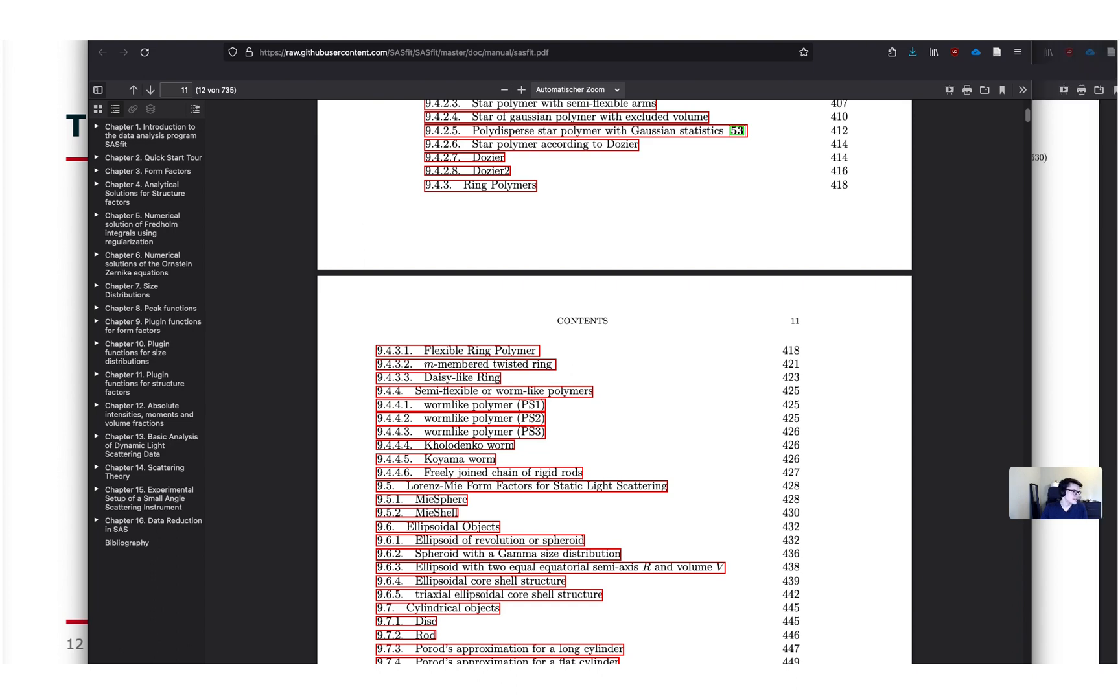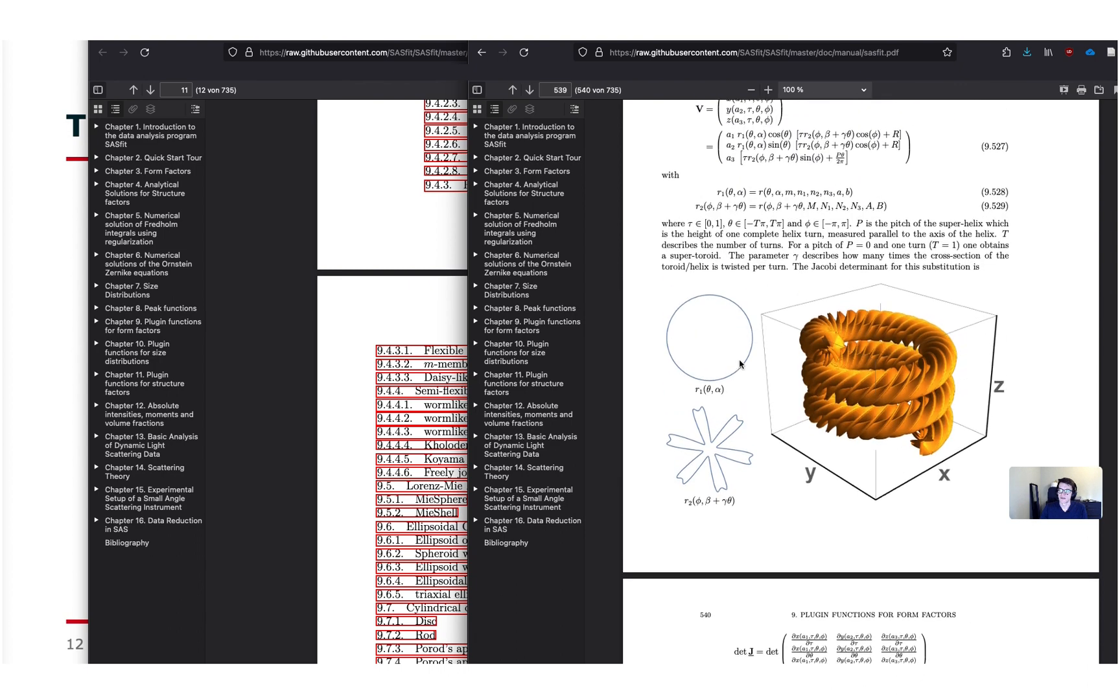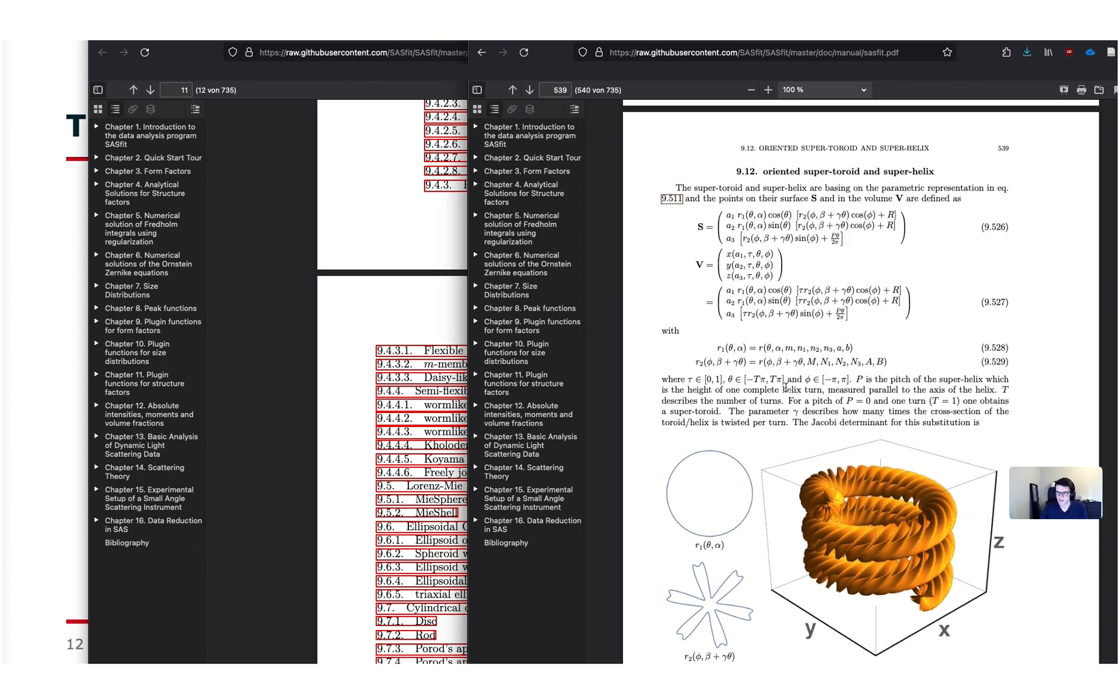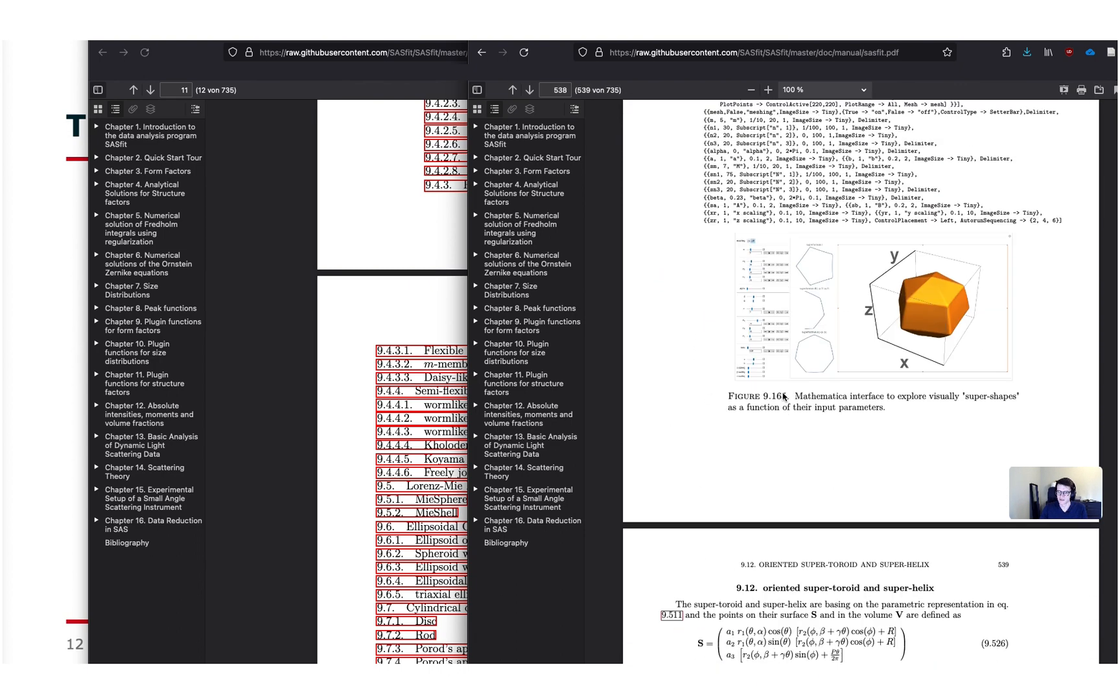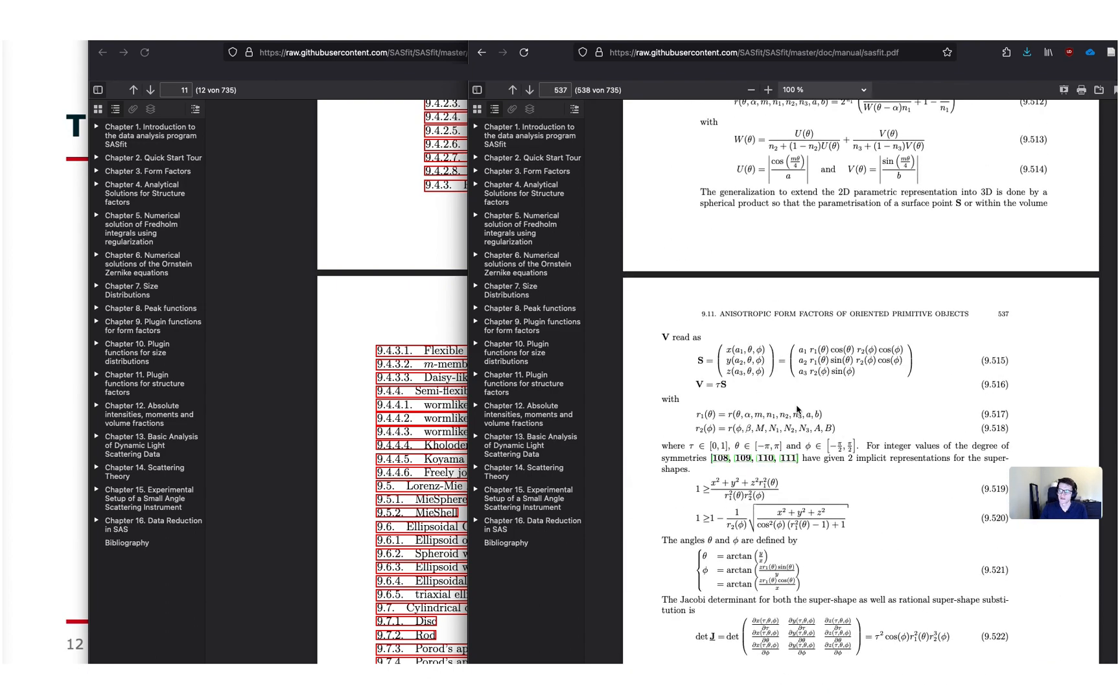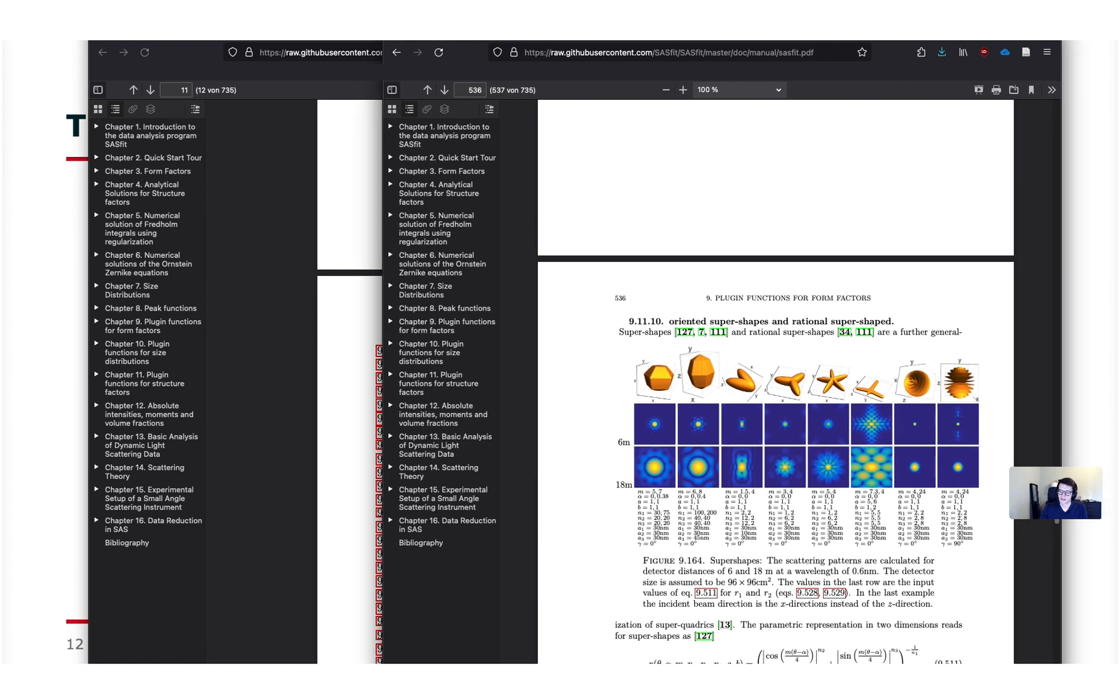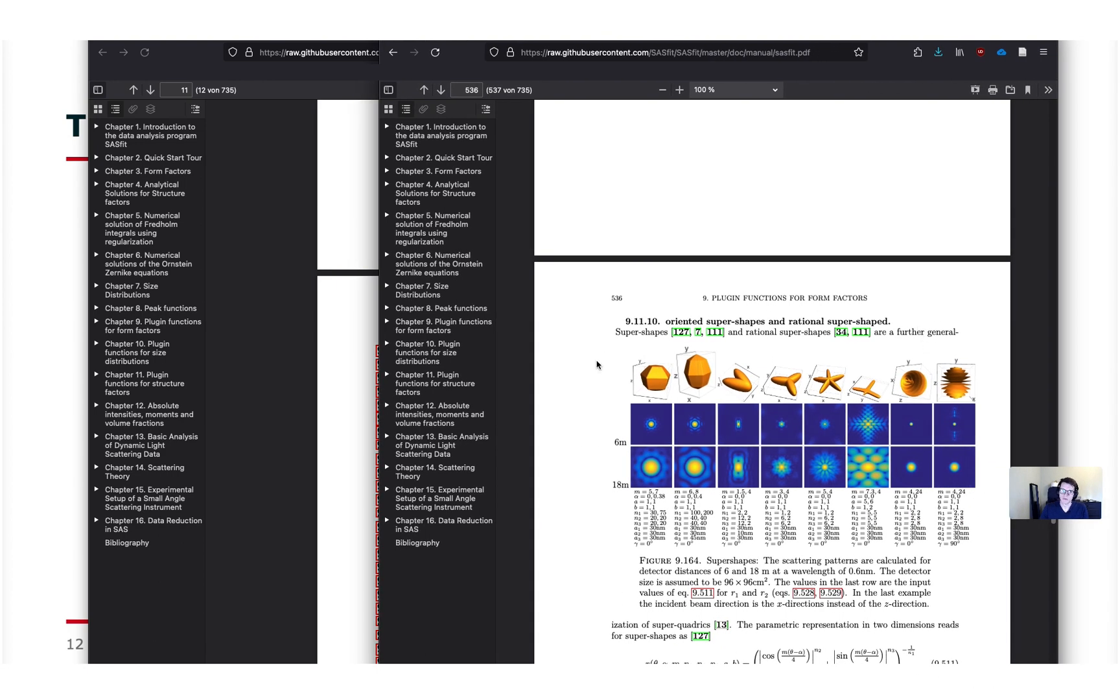Perhaps one second. I had this open already. Here it shows in the documentation of the model there are also some three-dimensional plots of the scatterers the models described. So it can be really complex shapes and types of some very specific form factors. I just wanted to mention this. This is some of the more recent implementations here.